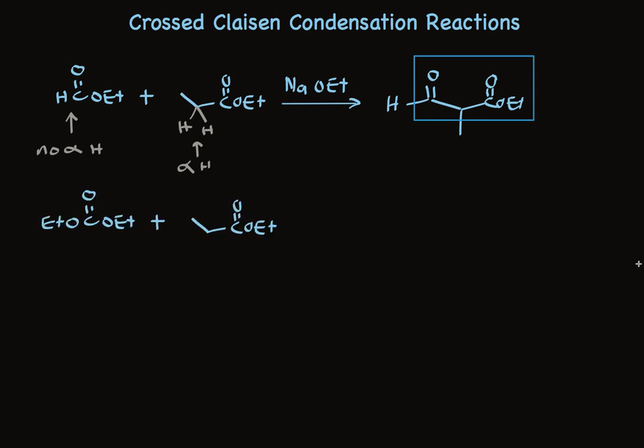This is a similar pair, isn't it? Again, the ester on the right has two alpha hydrogens. And the ester on the left has no alpha hydrogens. Instead of the hydrogen up above attached to the carbonyl, it has an ethoxy group. So when we treat this with base, we get an altogether different product.